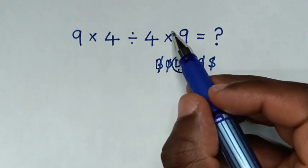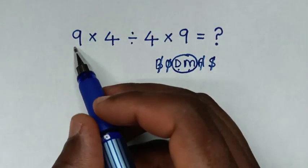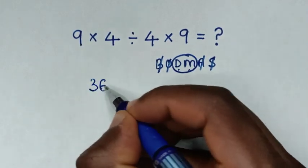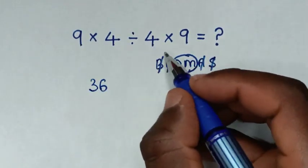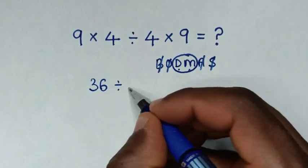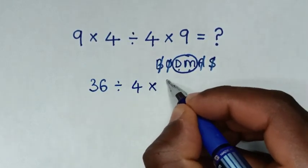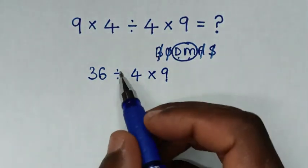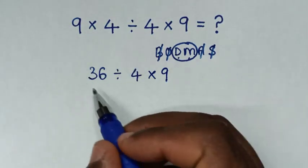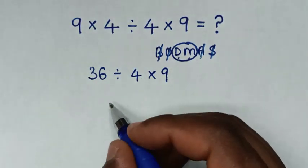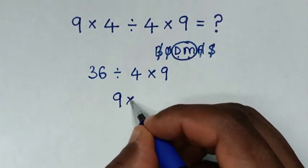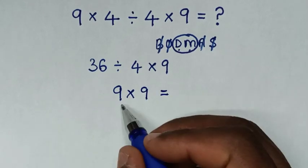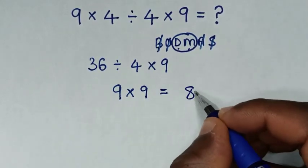So we'll deal with this first operation of 9 times 4, which is 36. Then divide by 4 times 9. In the next step, we'll deal with 36 divided by 4, which is 9. Then times 9. So it will be equal to 9 times 9, which is 81.